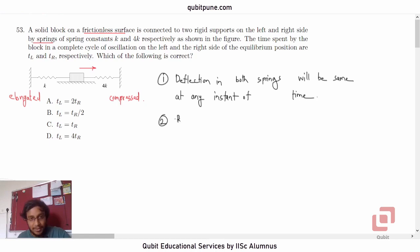Well, restoring force. Restoring force due to S1, let us call this as S1, is K into X. Standard formula. And what about the restoring force due to S2? The restoring force due to S2 will be 4k times X because the deflection is same.